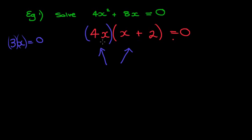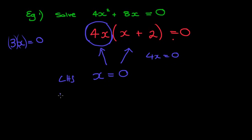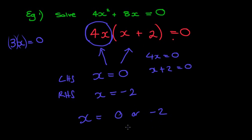Let's look at the case that 4x equals 0: x must be 0, since 4 times 0 is 0. Now what if the right-hand bracket x plus 2 equals 0? Then x would equal minus 2, because minus 2 plus 2 makes 0. So we have two solutions: x equals 0 or negative 2. We're covering both cases — which bracket equals 0. This is a really important concept.